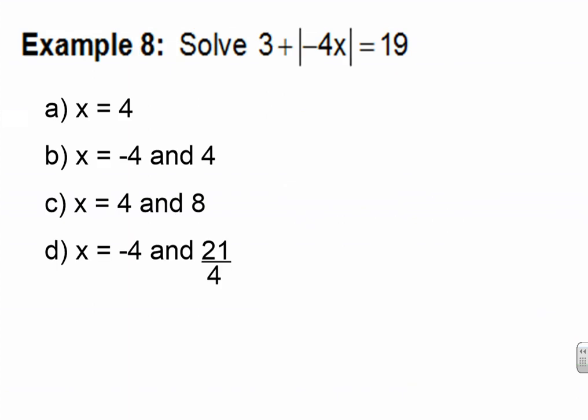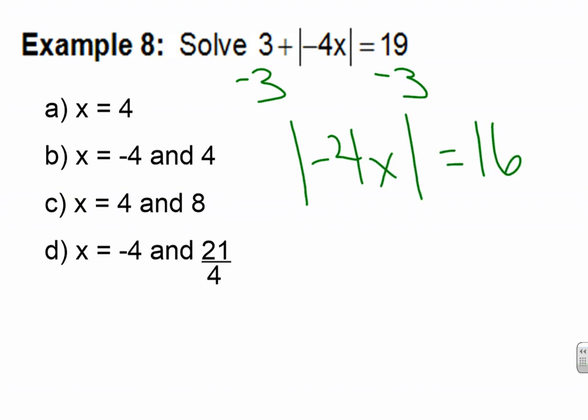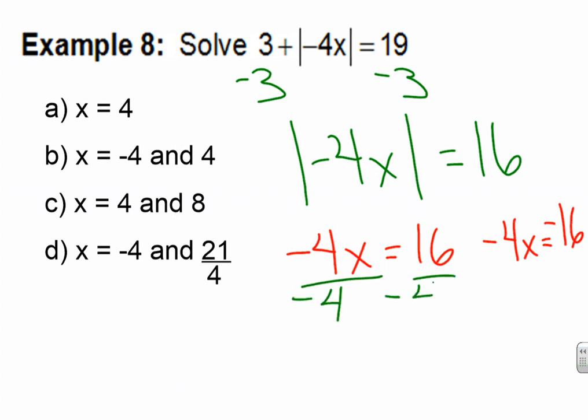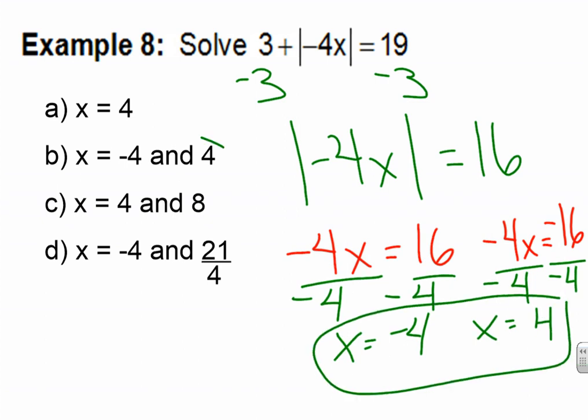Pause the video now as you try example eight. Press play to go over your answer. Subtract 3, subtract 3. The absolute value of negative 4X equals 16. Notice the absolute value bars are still there because I haven't written it twice yet — I had to move the 3 first because it was outside the absolute value bars. I rewrite what's inside equal to the positive answer, and equal to the negative answer. I divide both sides by negative 4, and get X equals negative 4 and X equals positive 4. Final answer, and that matches with letter B. I could have crossed off letter A to begin with because all absolute value problems have two answers, so anytime I see a single answer option, I know I'll have two instead.